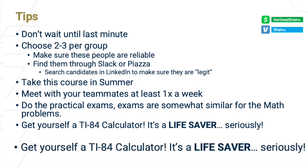Finally, get a TI-84 calculator — it is a lifesaver. It has functions like plotting, finding zeros, computing derivatives and anti-derivatives, and you can even program it to do modular arithmetic. Highly recommend getting one. Borrow it from a friend who has one just laying around from high school or college.